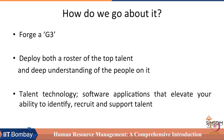How can an organization carry out a smart talent management process? We can call it a collaboration of G3 — the CEO, CHRO, and CFO. HR planning or talent management has to be informed and taken care of ultimately by this G3. They deploy both a roster of top talent and a deep understanding of the people on it.